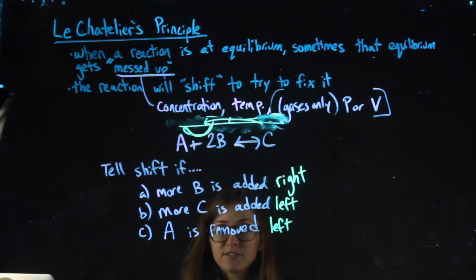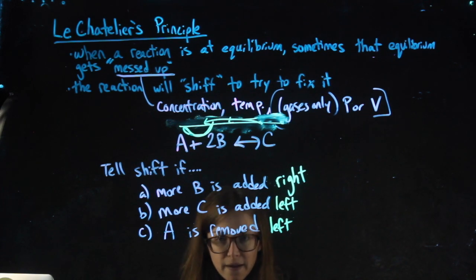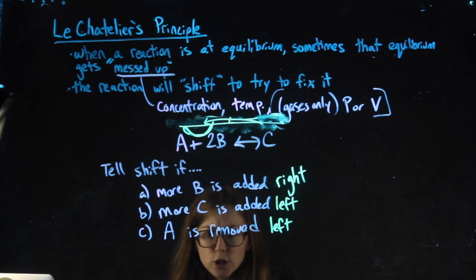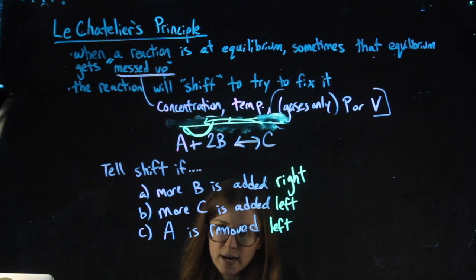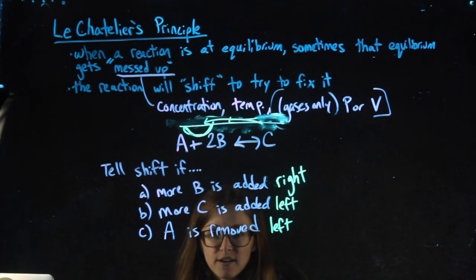Those are the answers: right and left. Sometimes we'll get no change, but not for examples like this. Try the practice problems—don't look at the answers first. Just try lefts and rights. If you can get left and right, that's the vast majority of everything we're going to do.